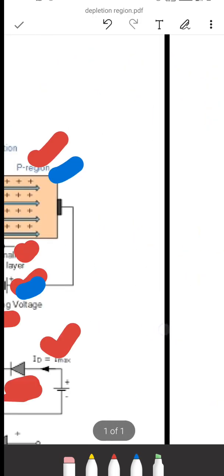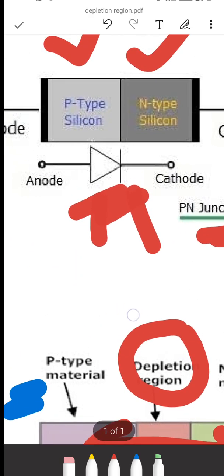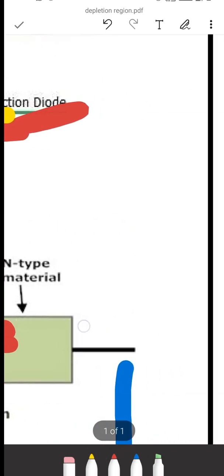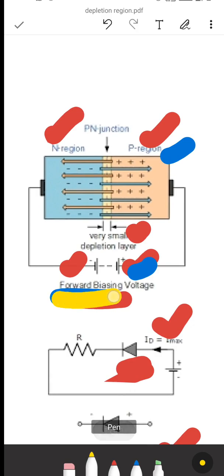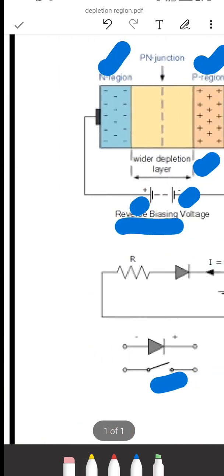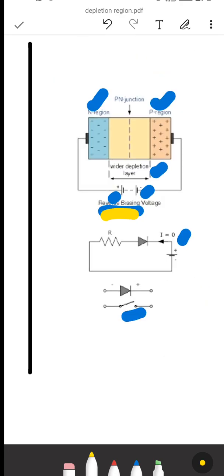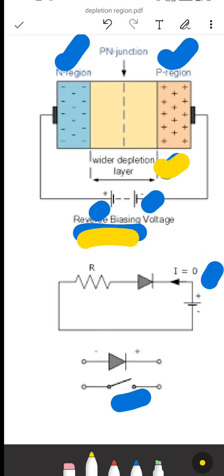So, to summarize the basic concept: when P-type and N-type materials are joined, we get a PN junction. At that PN junction there will be a depletion region. When we apply forward biasing, the depletion region reduces and current is able to flow. When we apply reverse biasing, the depletion region width increases and current becomes zero.